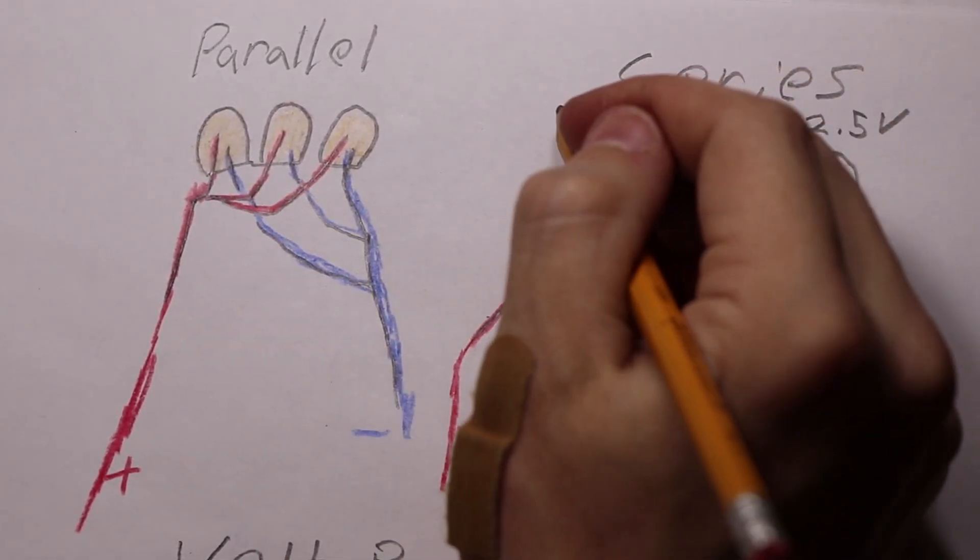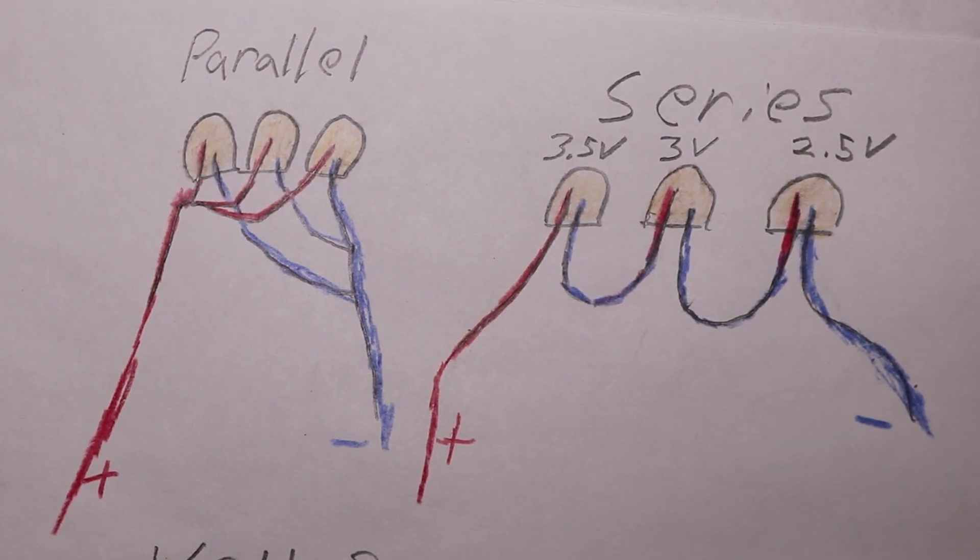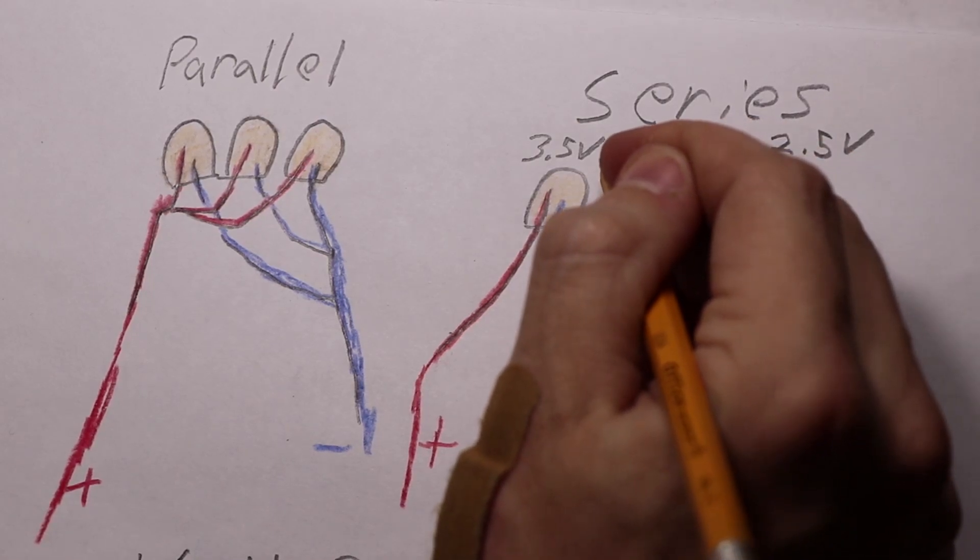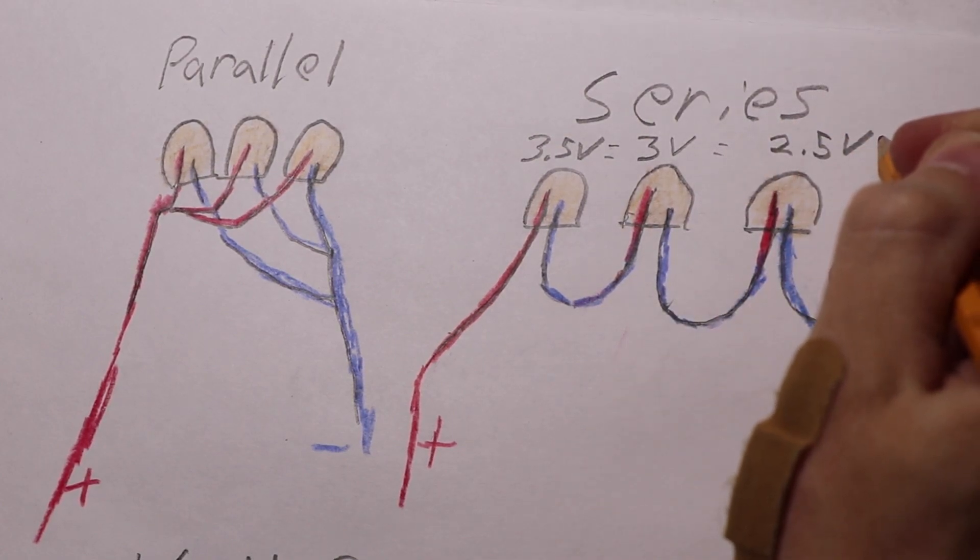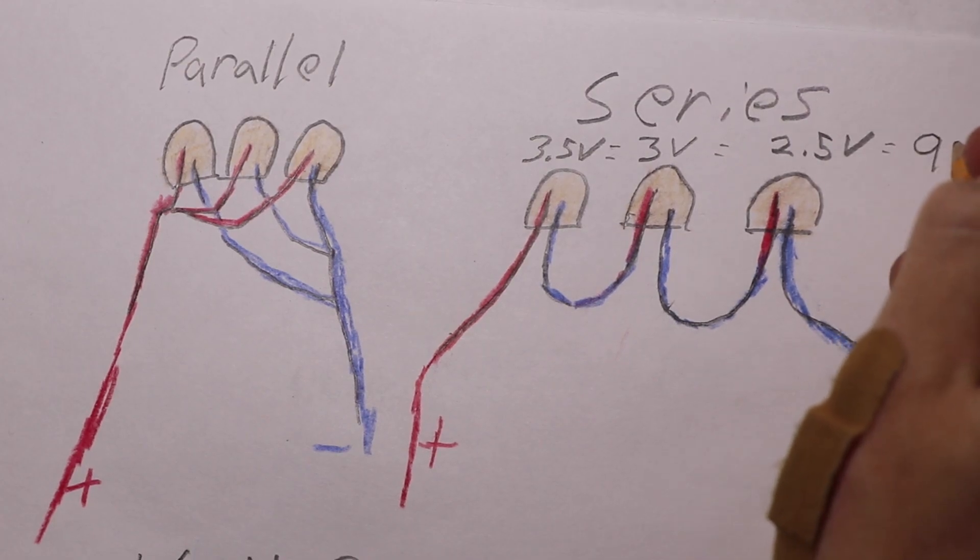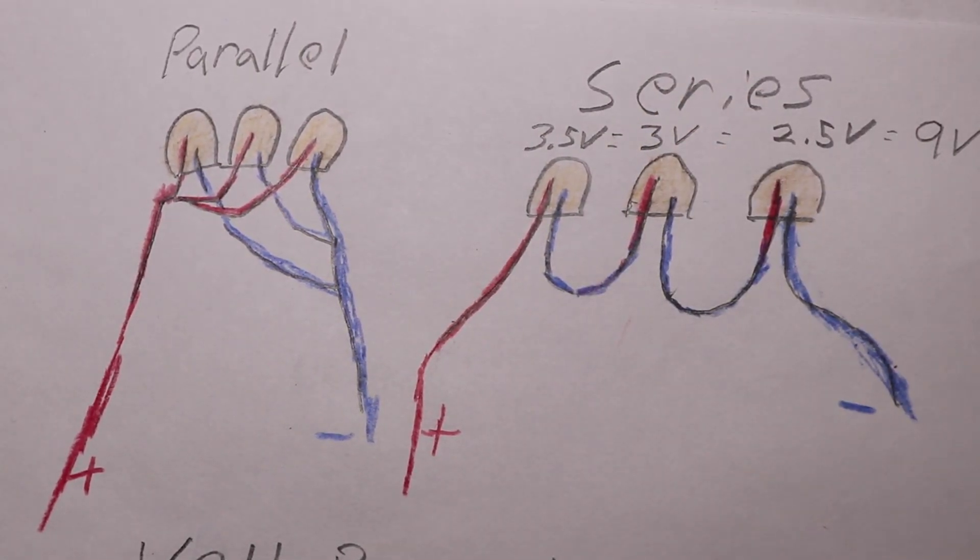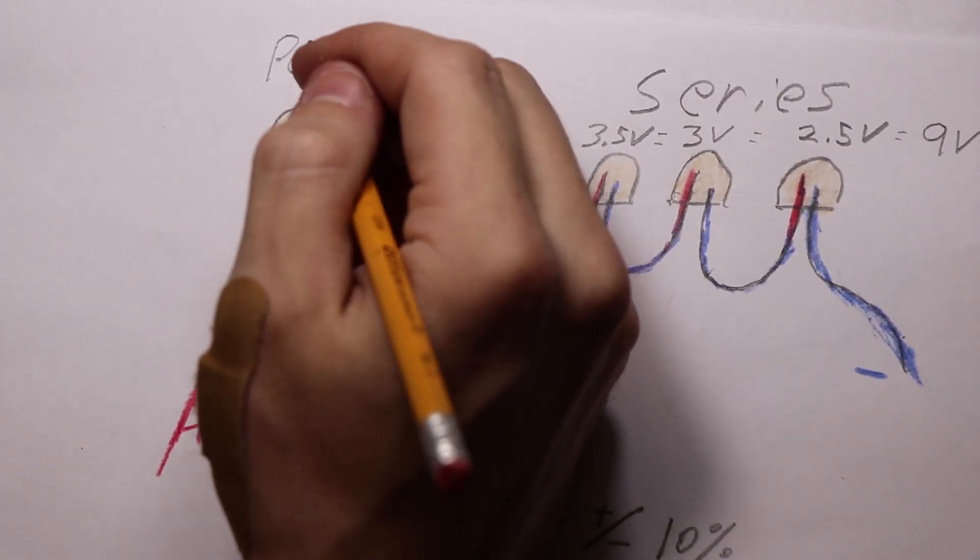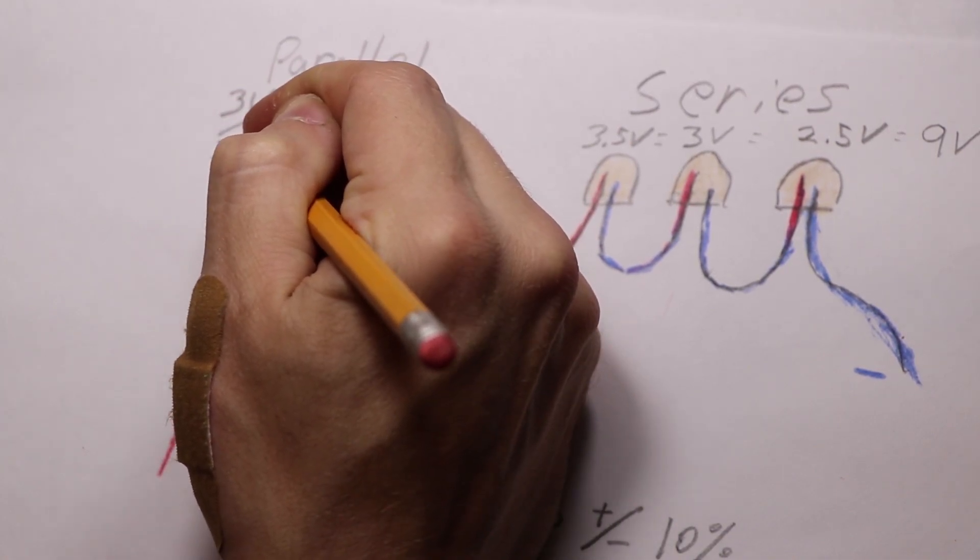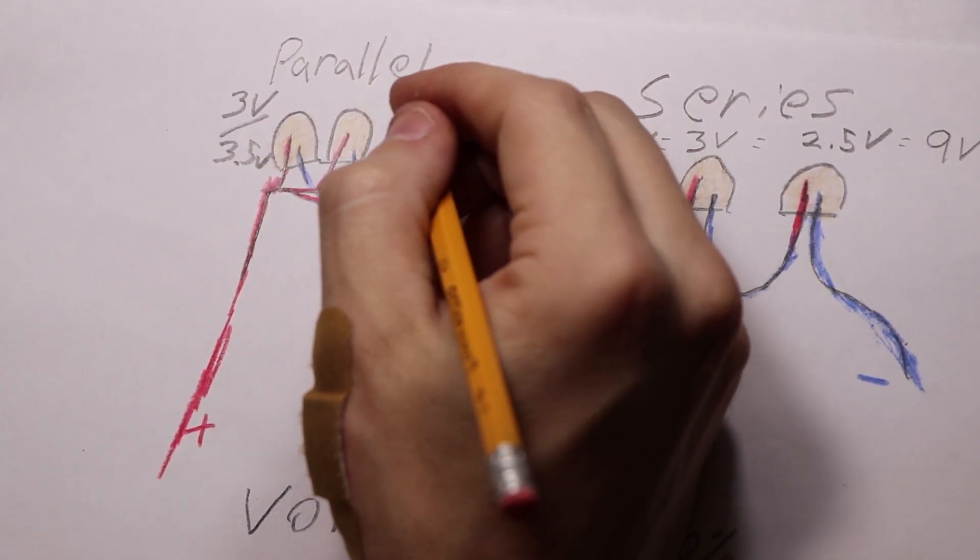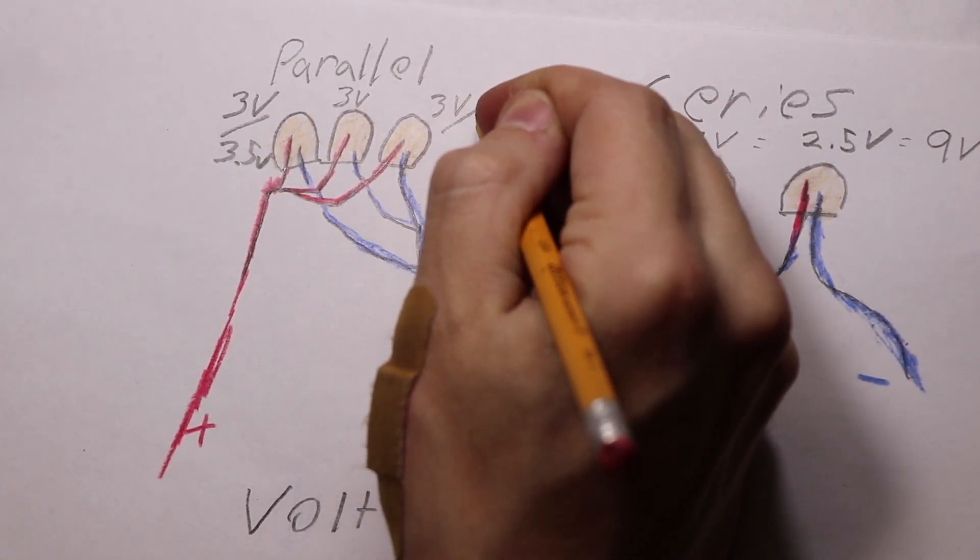One more quick thing to mention with the LEDs—sometimes because of manufacturer defects or different colors, you might have different voltages. For the series that should be fine; the LEDs are setting the demand for the voltage so they'll all receive their individual demands and equal out to 9 volts in this case. With the parallel, I believe it's an average of all three LEDs combined. The one that wants 3.5 volts won't receive that, it'll receive 3 and run a little cold. The one that wants 2.5 will receive 3 and run hot.